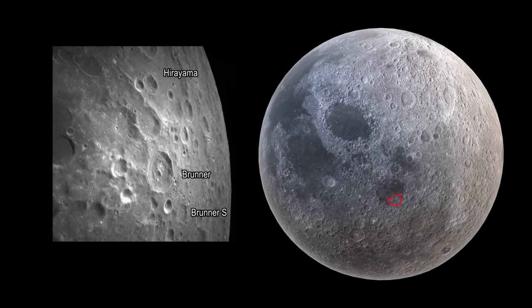The next features are the Brenner and Brenner S craters. Brenner S is a satellite crater to the Brenner Crater. These formations illustrate the complex interplay of impact events and subsequent modifications. We can see a well-defined rim, and inside, a rugged and irregular interior with a central ridge formation that runs along the midpoint. A ring-like formation on the floor adds to the interior complexity.